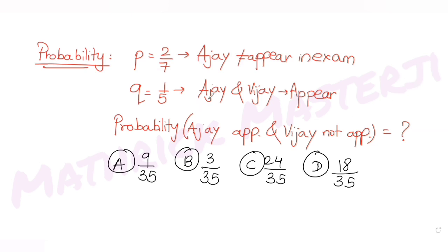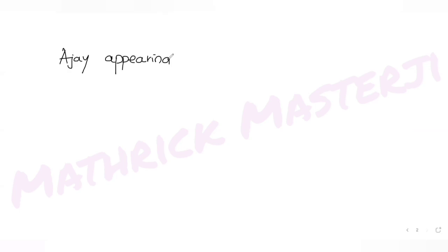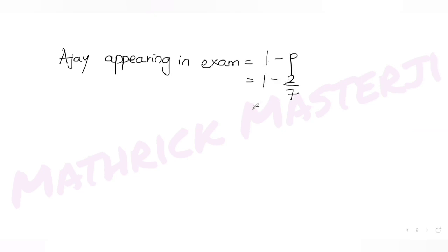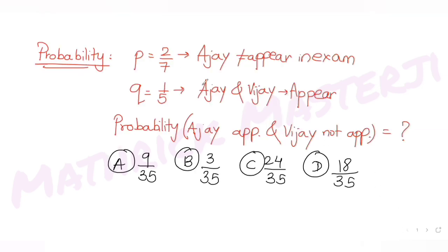For the solution: Ajay not appearing in the exam has probability 2/7. So the probability of Ajay appearing in the exam is its complement, which is 1 minus p. That gives us 1 - 2/7 = 5/7.